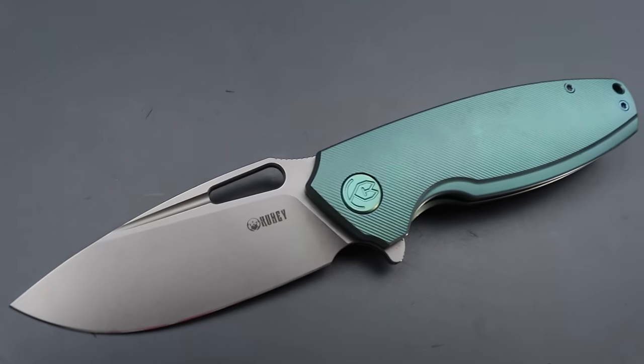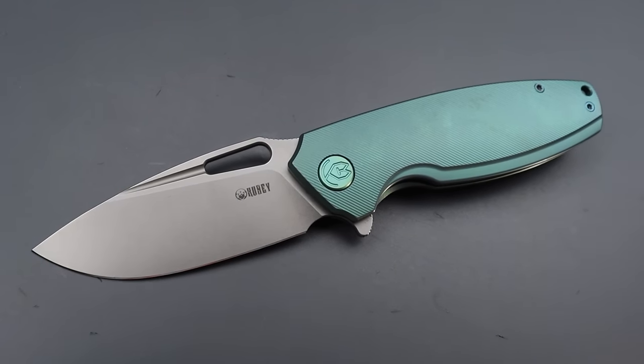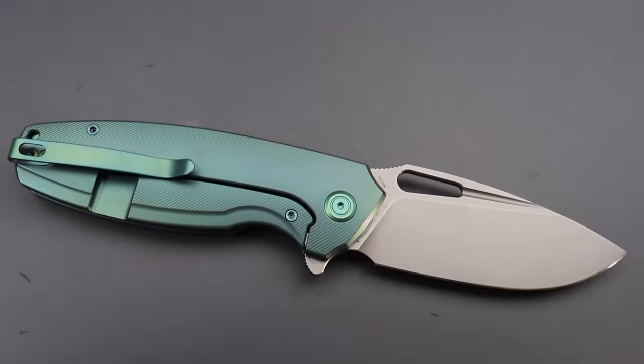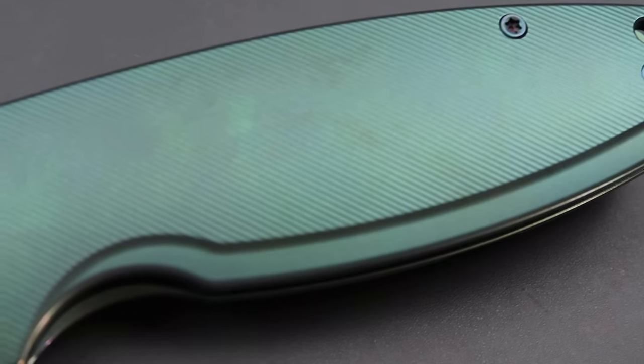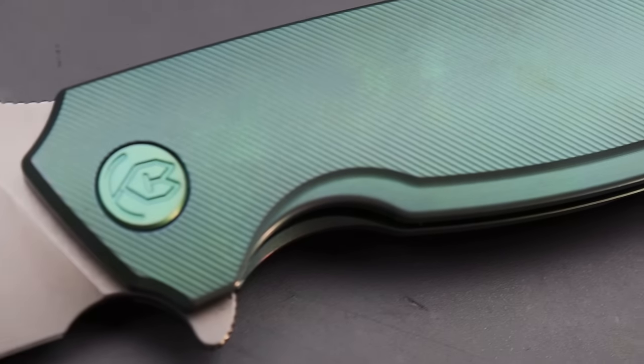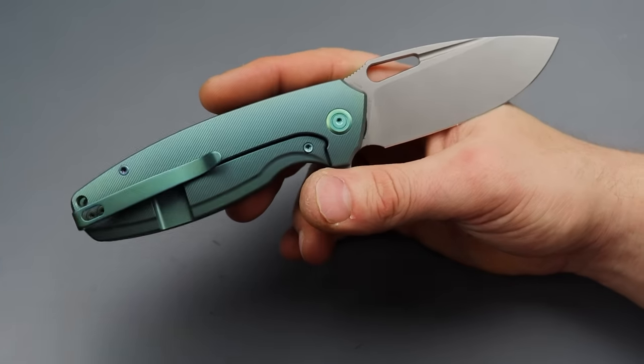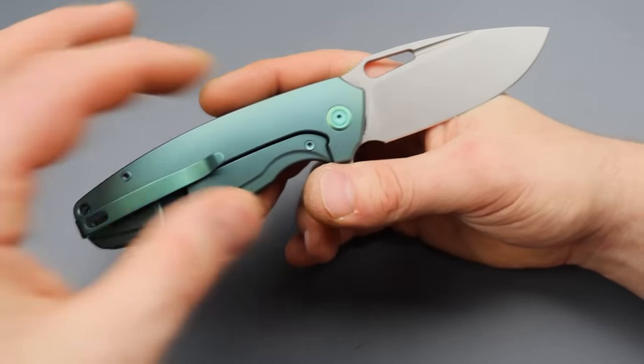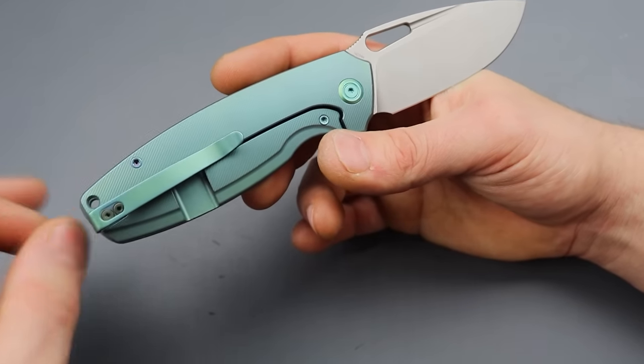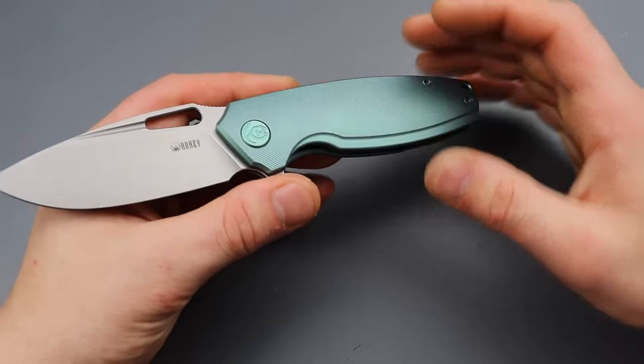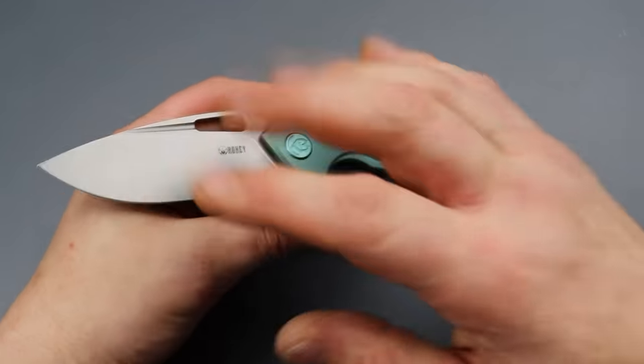So, the other one was a budget liner lock version. This one's a titanium frame lock with micro milling, steel lock bar insert, titanium spring pocket clip. So, you know, in 14C28M blade steel, this was enough of a change that it could make the list. But, yes, the Tidious, Tidious, whatever you want to call it, did exist. But, it existed in a steel liner lock with G10 scales.